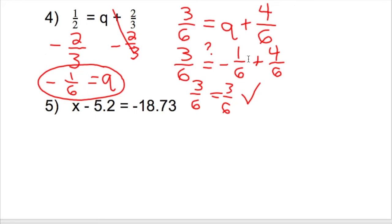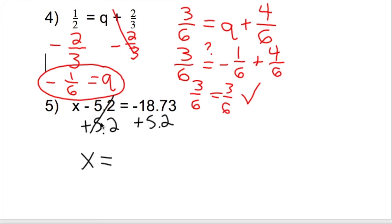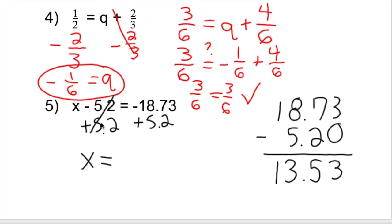Number 5: x minus 5.2 equals negative 18.73. We always want to get the variable by itself. We're subtracting 5.2, so the opposite is to add 5.2. Whatever you do on one side, you do on the other. Negative 5.2 plus 5.2 cancels out, leaving x. On the right side, negative 18.73 plus 5.2 is negative 13.53. So x equals negative 13.53.